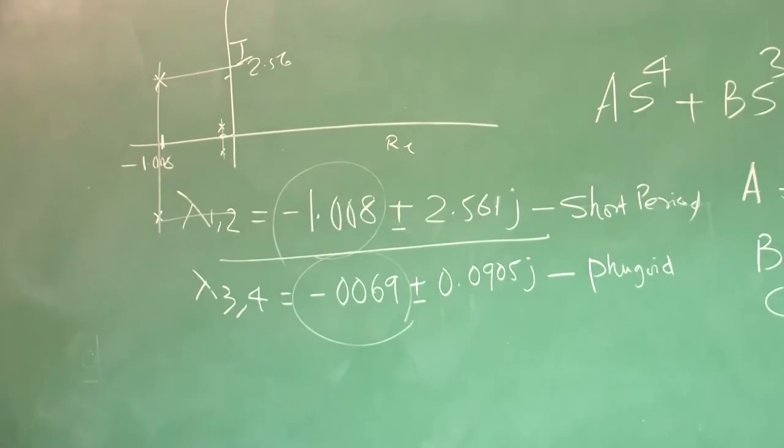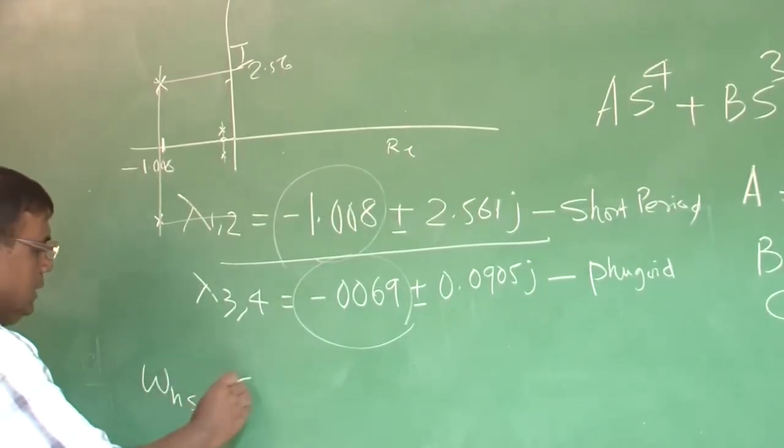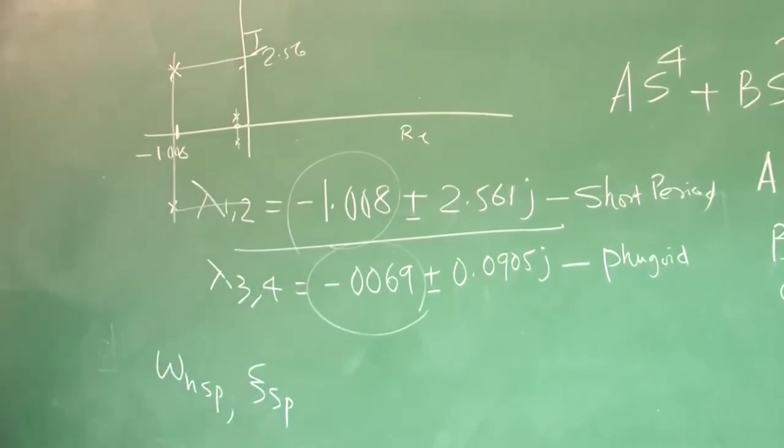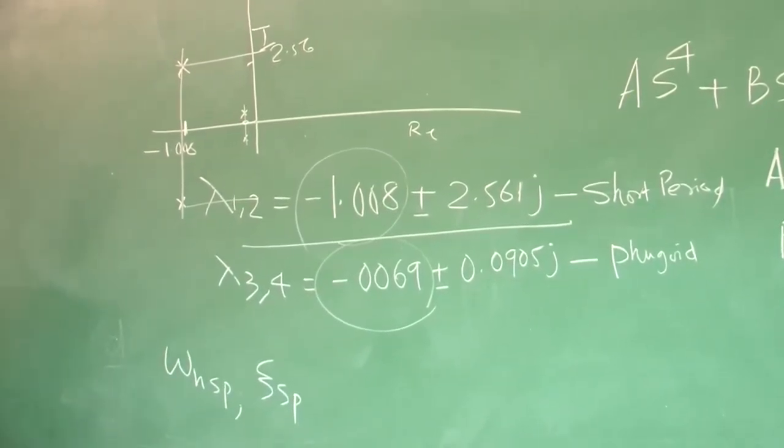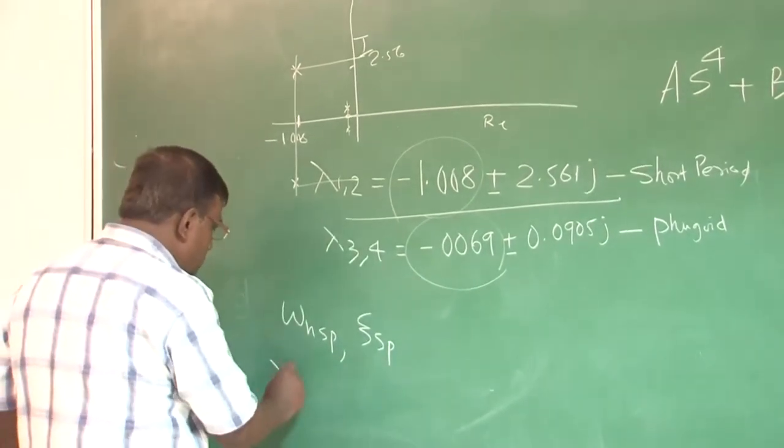Now you are expert, if I try to ask you what will be omega_n short period, zeta short period, you should be able to find out. Yes or no, you have done it so many times. Now it is only second order equation we are handling. If I pick this lambda_1,2, the method will be very simple.